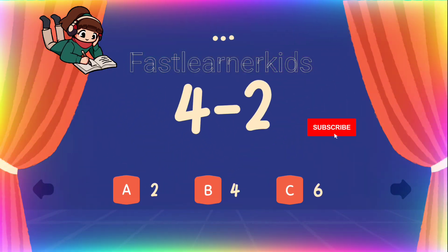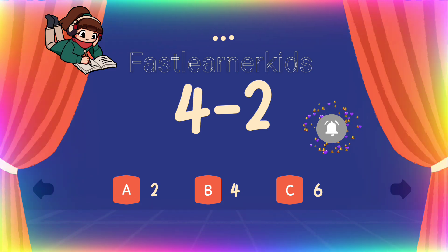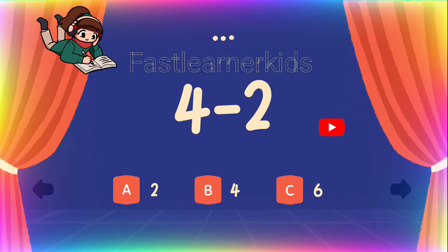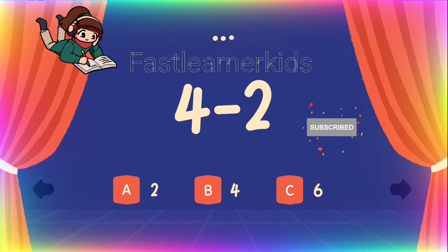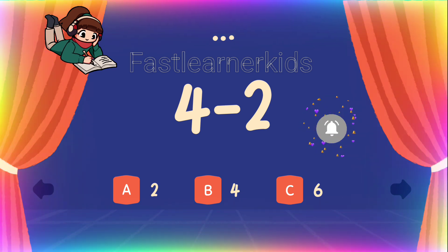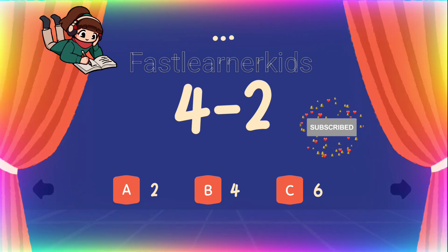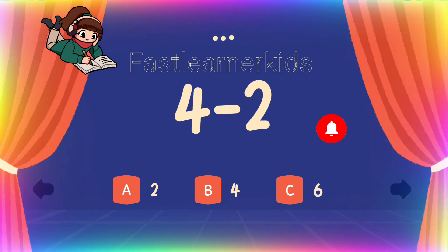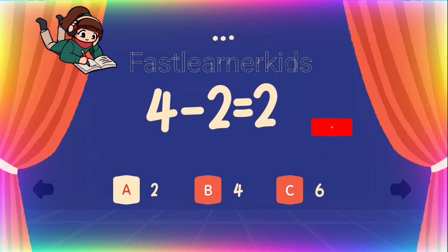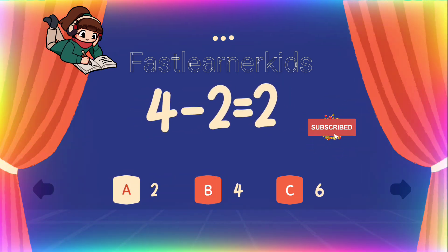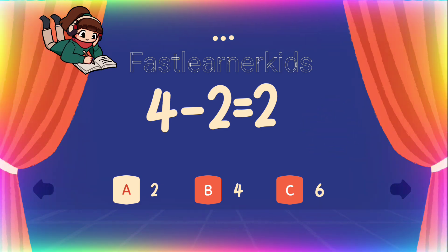4 minus 2 equals — is it a? 2. Is it b? 4. Is it c? 6. 4 minus 2, do you have your answers ready? 4 minus 2 is equals to 2. A is the answer: 2.